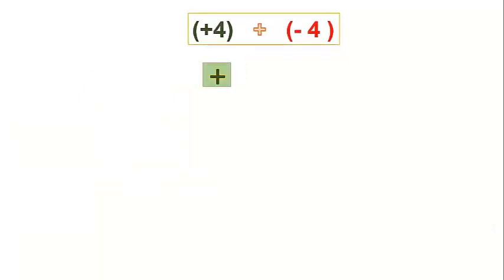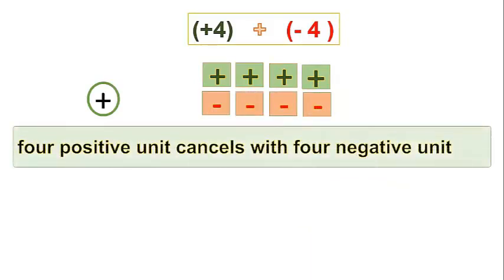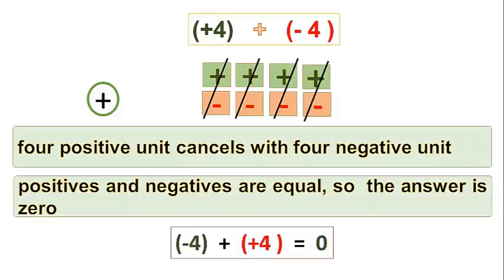When we have 4 positive symbols and 4 negative symbols and add them, 1 positive and 1 negative get cancelled. Likewise, all 4 positives get cancelled with all 4 negatives. So, 4 positive units cancel with 4 negative units and the result is 0.